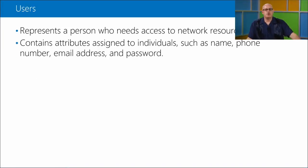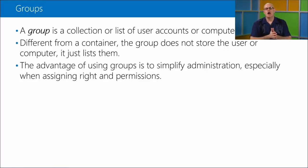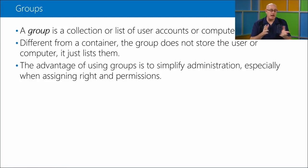Users represent a person who needs access to network resources and contain attributes assigned to individuals such as name, phone number, email address, and password. A group is a collection or list of user accounts and computers. They're different from a container - a container is a management area or logical management entity. A group is more a collection of resources for a common goal, to enable rights and permissions of some kind.